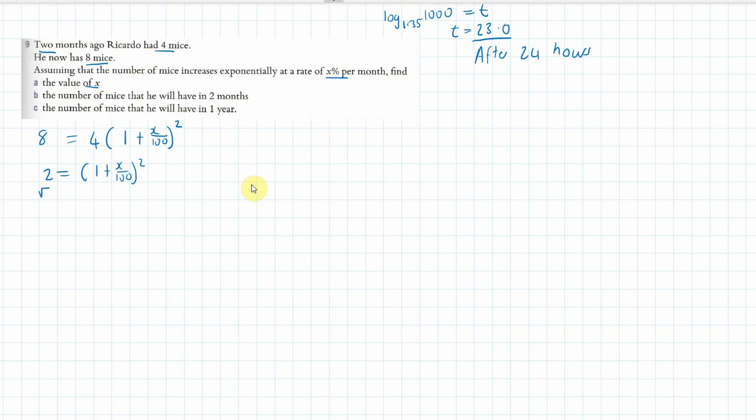Now I'm going to square root both sides so I should get 1 plus x over 100. And so x over 100 should be equal to the square root of 2 minus 1. And so x should equal 100 times square root 2 minus 1.